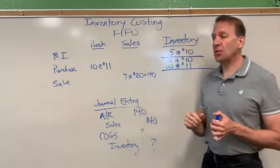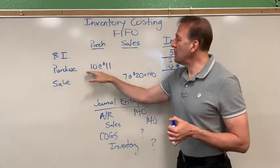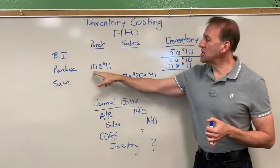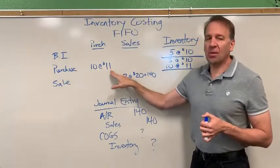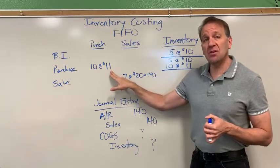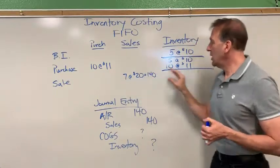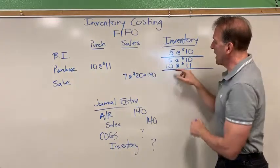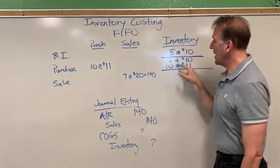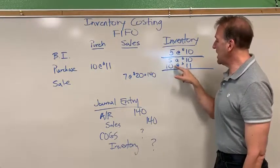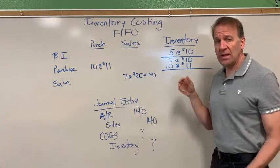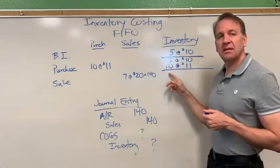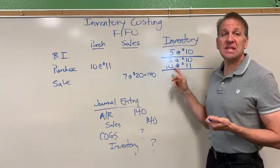Five soccer balls at $10 each. Then I went and purchased more — I purchased 10 more and the price had gone up to $11 per soccer ball. So I'm keeping track of them separately: five at $10 and ten at $11. I need to keep track of these costs. So I've got a total of 15 soccer balls.